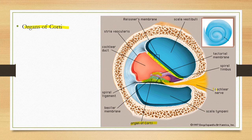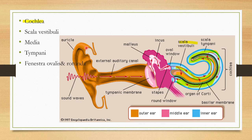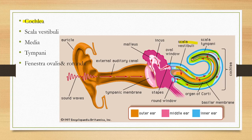The organ of Corti is connected to the cochlear nerve, which helps in hearing. The pinna directs sound waves into the auditory canal, where they vibrate the tympanic membrane. The tympanic membrane is connected to the malleus, so vibrations are transferred to the internal ear through the malleus, incus, and stapes respectively. The stapes is connected to the oval window, so this vibration is passed on to the perilymph in the scala vestibuli.